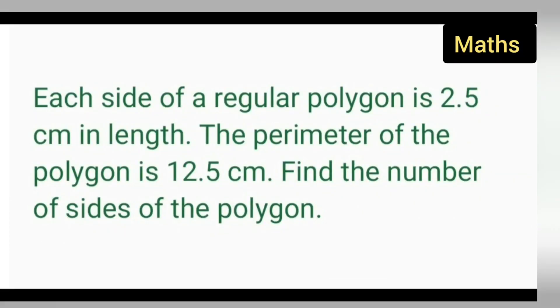Welcome to today's class of mathematics. Today's question is taken from Class 7 mathematics. This is a word problem type. The question is: each side of a regular polygon is 2.5 centimeters in length. The perimeter of the polygon is 12.5 centimeters. Here the perimeter is given and the length is given in centimeters.